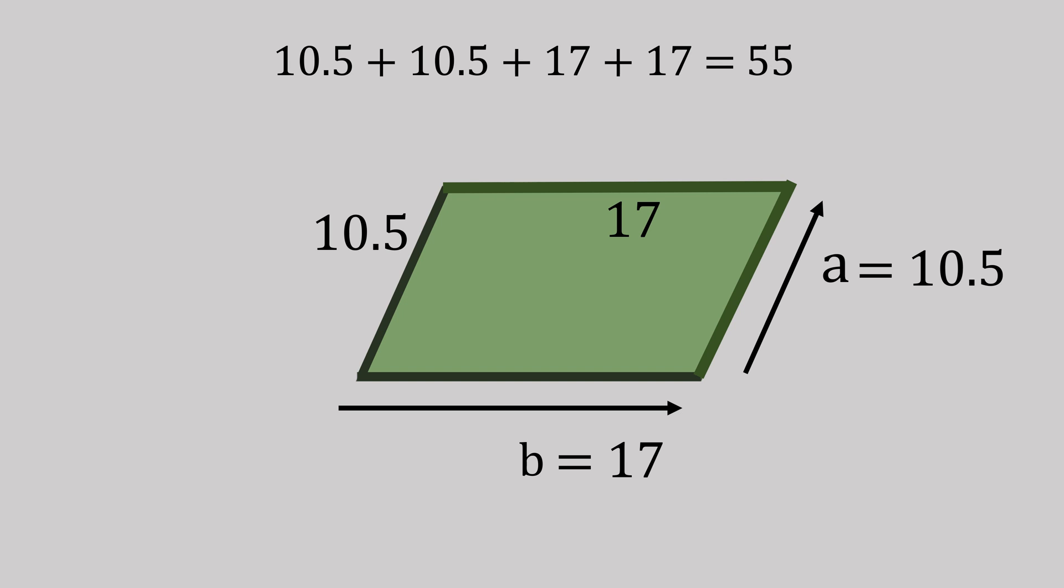Or the mathematical way, 2 times (a plus b). So a plus b is 27.5, times that by 2, and again it gives us 55.